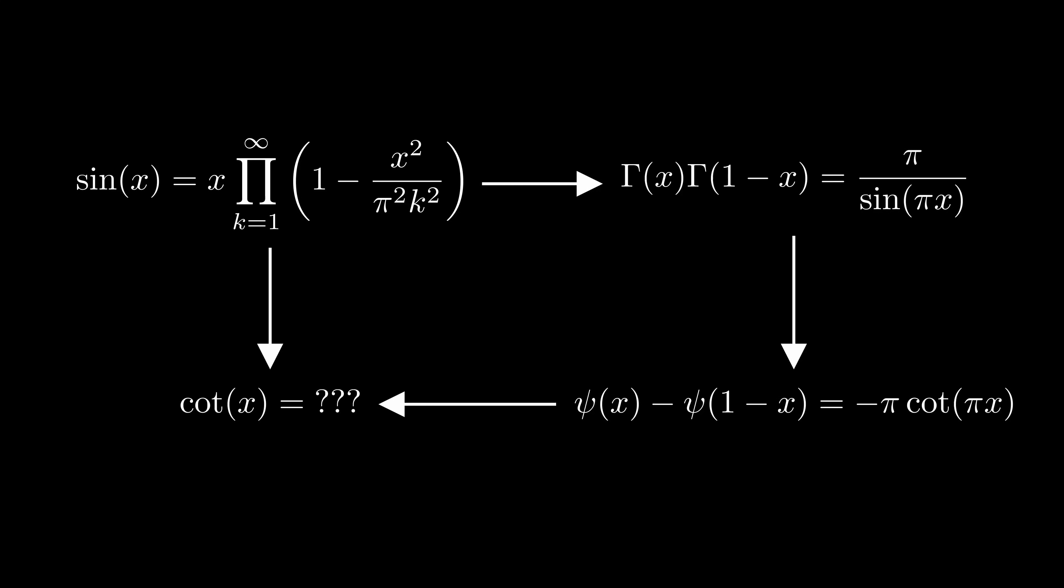Alright, we've now derived the trig formulas that I promised at the beginning of the video, but we're still not quite finished. To recap, we started with the sine product formula. Granting that this formula works, we used it to prove the gamma function's reflection formula, which we then used to prove the digamma function's reflection formula. But there's a related formula for cotangent that I think this video would be incomplete without. This formula can be derived either from the digamma reflection formula or by the sine product formula. I'll use the sine product formula because it's easier.